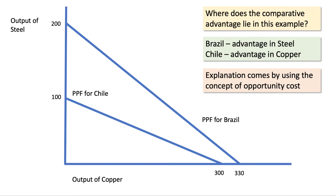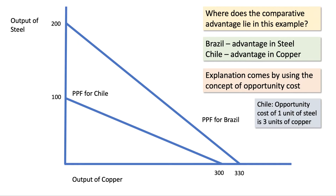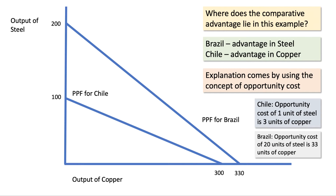The explanation for this lies in the concept of opportunity cost. If you take the PPF for Chile, look at the ratio — they can produce three units of copper for every unit of steel. So for every extra unit of steel they'd have to sacrifice three units of copper. Is that also the case for Brazil? Not quite. If they produce an extra 20 units of steel, they only have to sacrifice 33 units of copper. So the ratio isn't three to one — it's less than three to one for Brazil. Therefore Brazil has the relative advantage, measured in terms of opportunity cost, in steel, and Chile must have a relative advantage in copper. Feel free to press the pause button at any point during the video if you want to take a few more moments to think about these things.